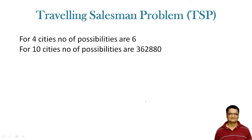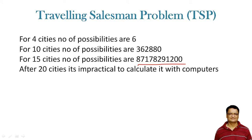If there are, let's say, 10 cities, the number of possibilities will become 362,880. If I have 15 cities, the possibilities will become this much big, which is even hard for me to read out. And for 20 cities, it will become practically impossible to calculate even with computers.